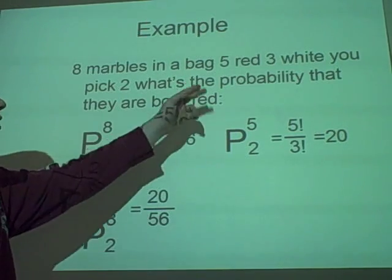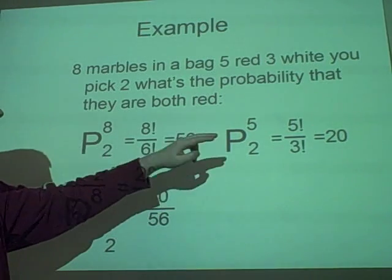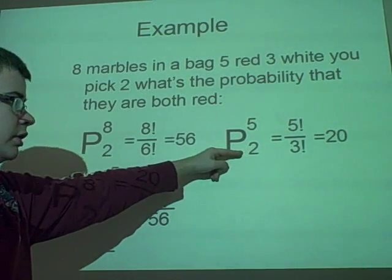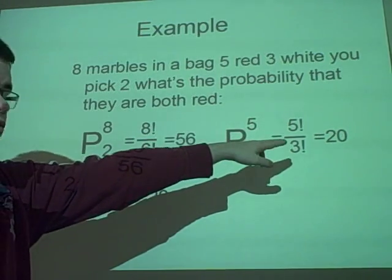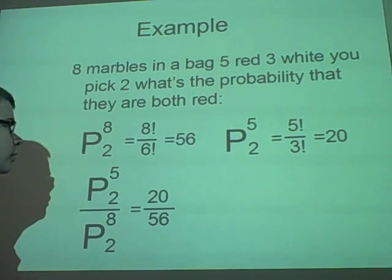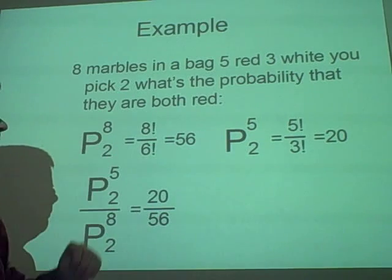Then, we have red. So, the probability that they are red is there's five red, and you want to pick two of them. So, the probability of that happening is twenty. Five factorial over three factorial, because you've got the n minus r.